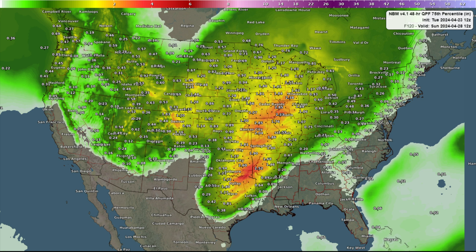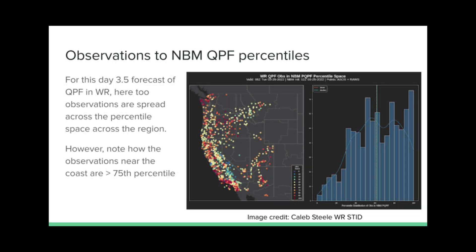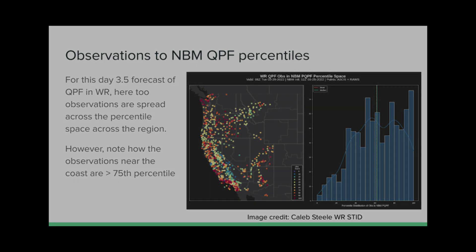Some locations could see the 5th percentile verify, while others see something over the 95th percentile, and even beyond the 99th percentile if we could plot that. Again, Western Region has done studies to show that oftentimes percentiles do not verify the way you expect them to. So be cautious when you use these maps and are trying to show information within them.